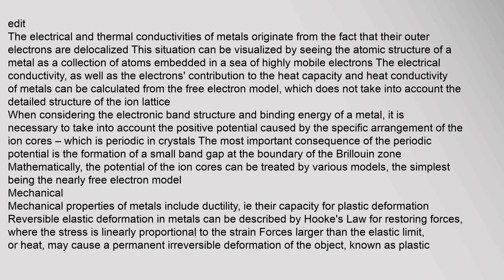The electrical and thermal conductivities of metals originate from the fact that their outer electrons are delocalized — the atomic structure of a metal can be visualized as a collection of atoms embedded in a sea of highly mobile electrons. The electrical conductivity, as well as the electrons' contribution to heat capacity and heat conductivity, can be calculated from the free electron model. When considering electronic band structure and binding energy, it is necessary to account for the positive potential caused by the periodic arrangement of ion cores. The most important consequence is the formation of a small band gap at the boundary of the Brillouin zone, and the potential of ion cores can be treated by the nearly free electron model.